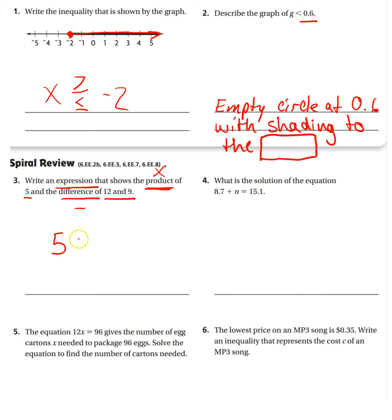So five, the product of five times, product means times, the difference of 12 minus nine, and we need to put these in parentheses.